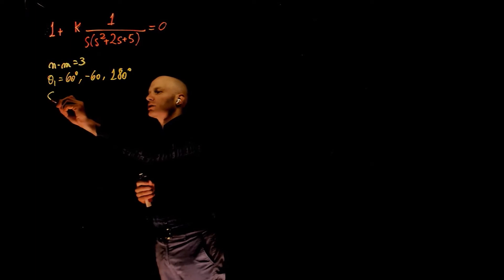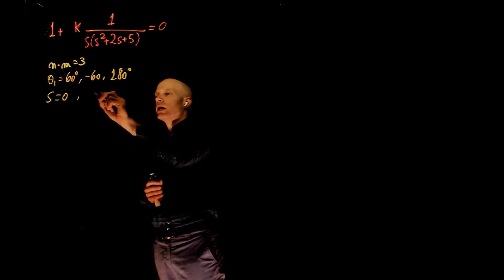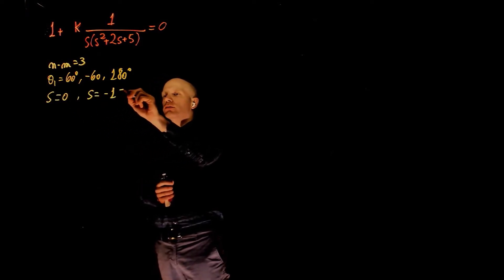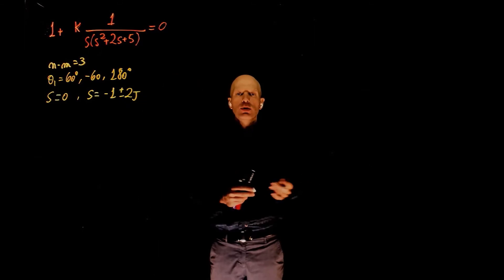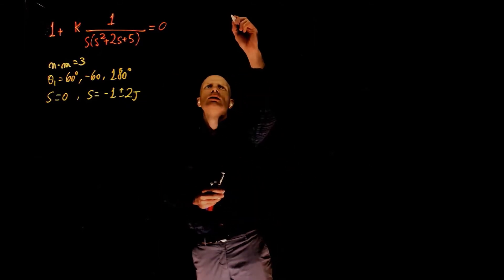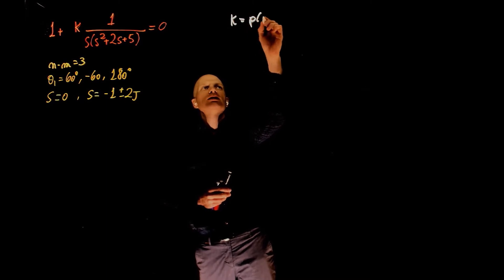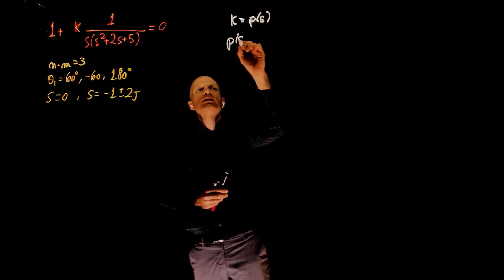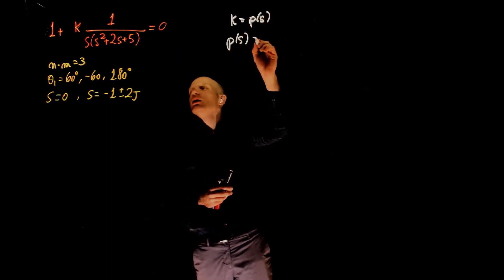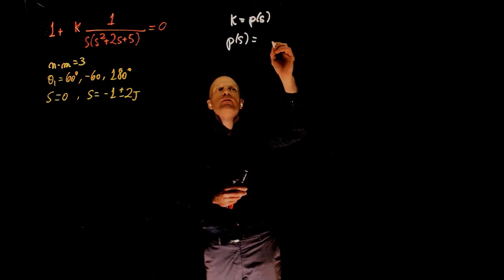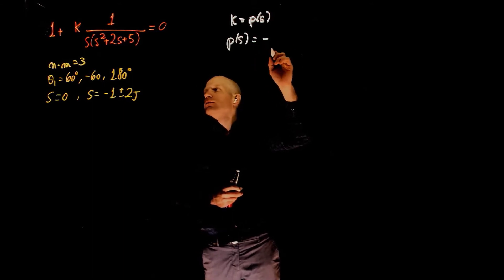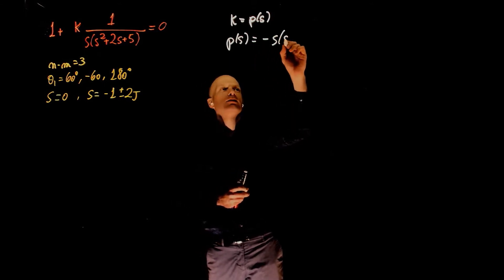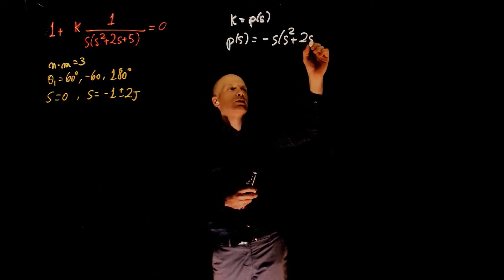The poles are s equals 0, and s equals negative 1 plus minus 2j. Now let's look for breakaway or breaking point. To do that, we set k equals to p of s, isolate for p of s in this expression, that gives negative s times s squared plus 2s plus 5.